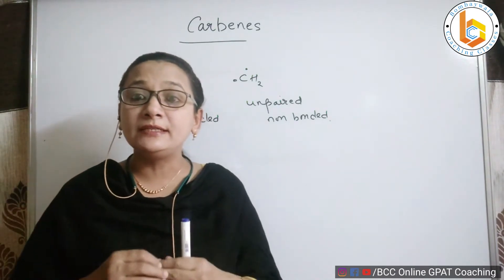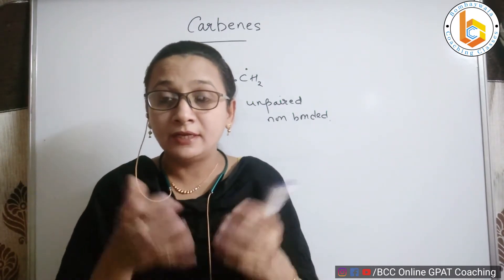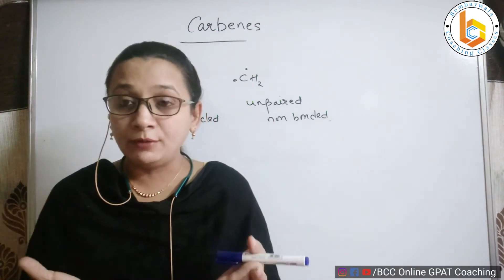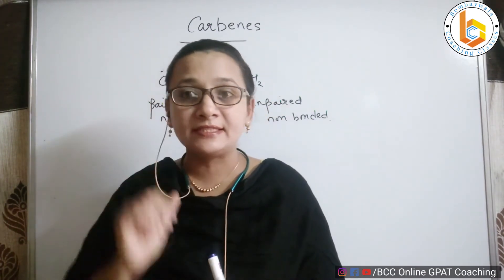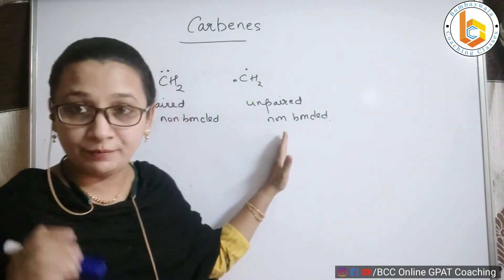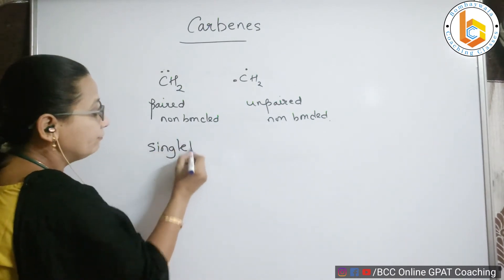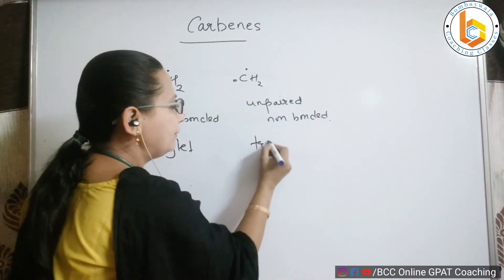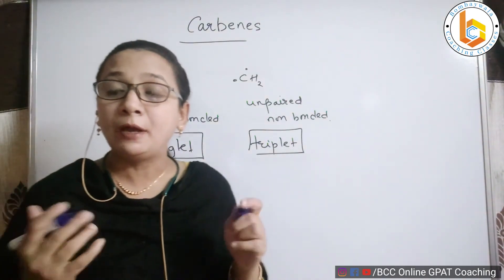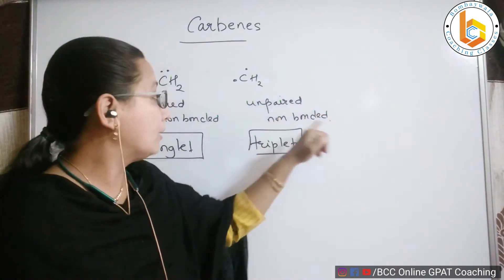Now let us look at carbenes from a spectral view. These carbenes are excited species. You must have seen in UV spectroscopy that from the ground state the molecule jumps into the excited state. In the excited state it occurs as a singlet and a triplet. The paired non-bonded carbene appears as a singlet, whereas the unpaired non-bonded carbene appears as a triplet.